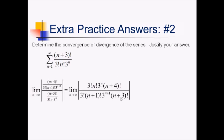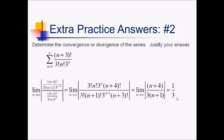And (n+4)! over (n+3)! cancels out everything except (n+4) in the numerator. So upstairs the only thing left is (n+4). Downstairs, all that's left is (n+1) and a 3 from the exponent reduction. So we have (n+4) over 3(n+1). Now as n approaches infinity, the +4 and +1 are insignificant and we can ignore them. So we really just have n over 3n, which reduces to 1/3. Since the ratio is less than 1, this series converges by the ratio test.